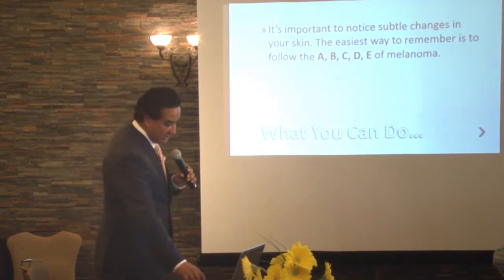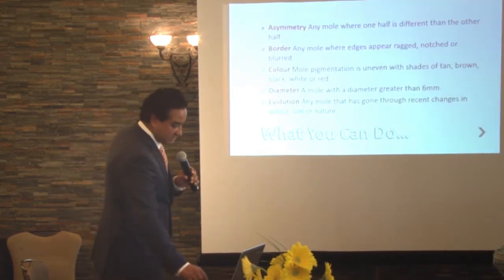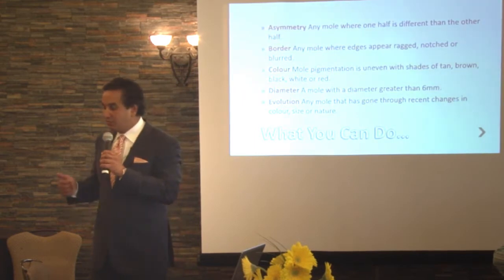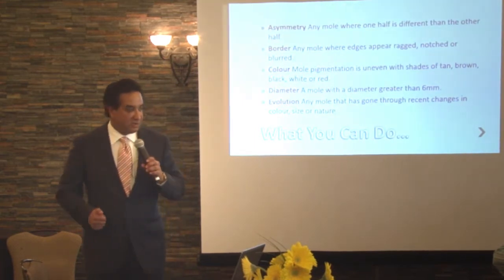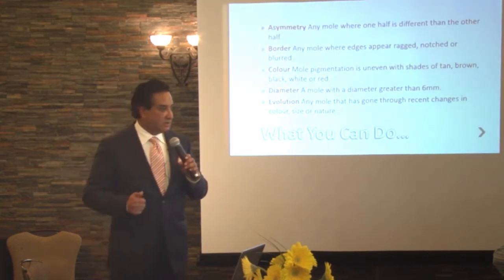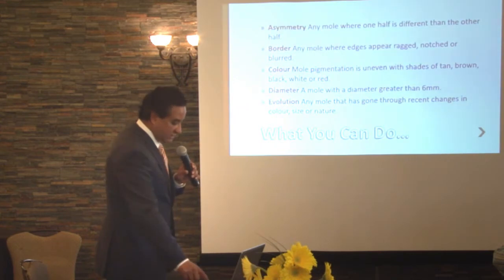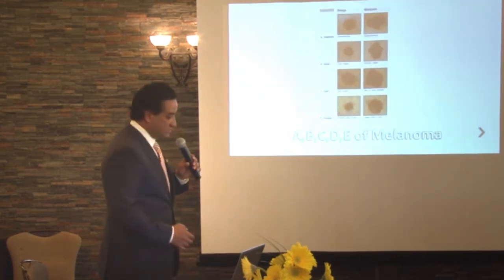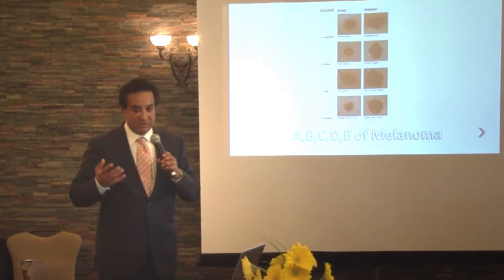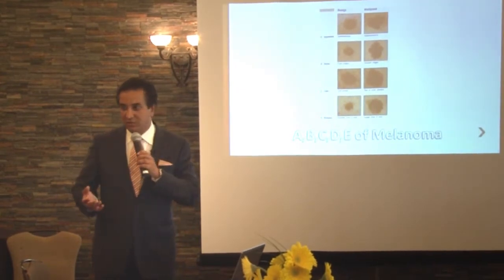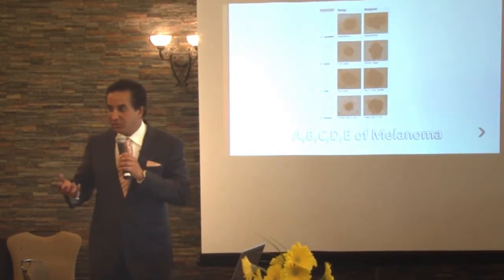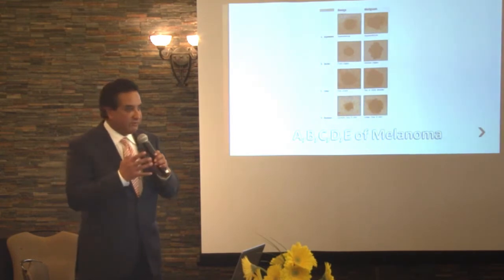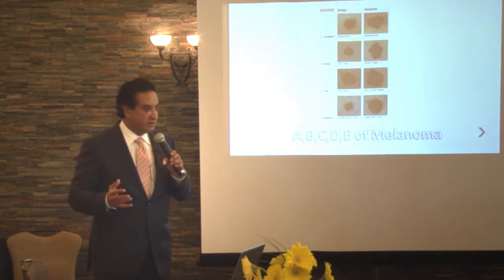Everyone talks about the ABCDs: the asymmetry, the border irregularity, the color, the diameter, and the slow change that may happen. You can take a look at slides where they show what asymmetry looks like, what border irregularity looks like, what color and evolution and all these changes look like.